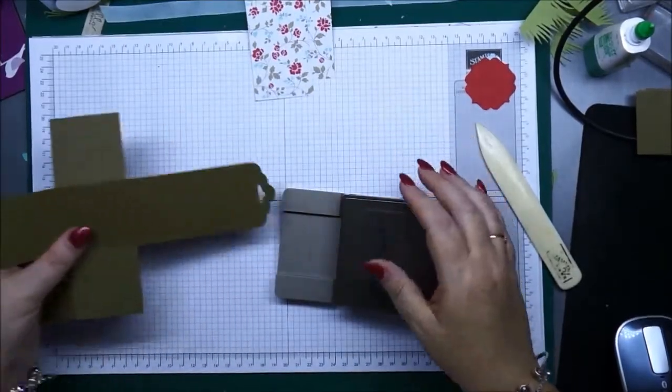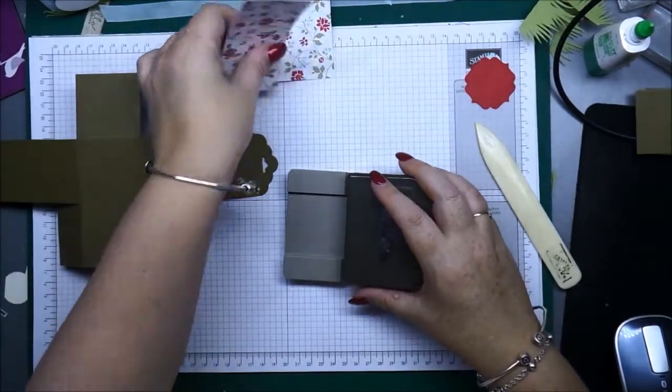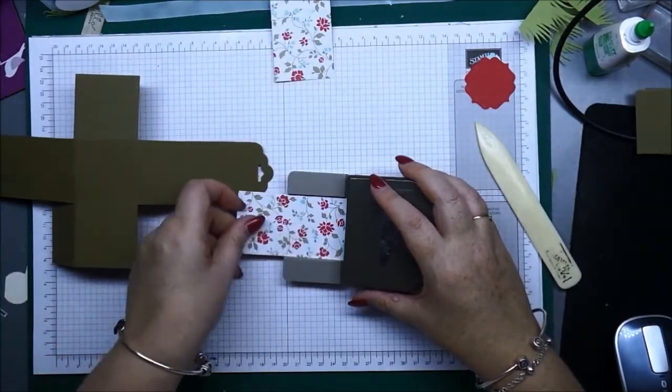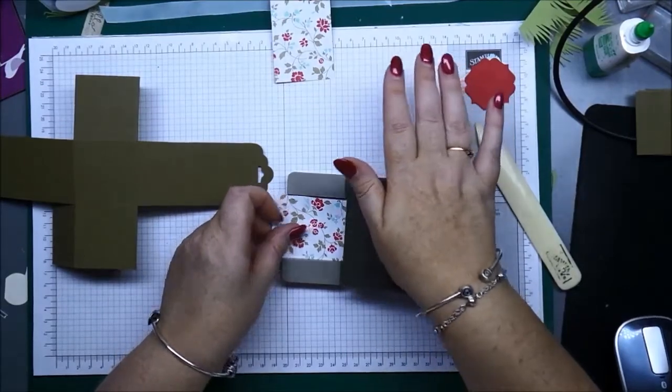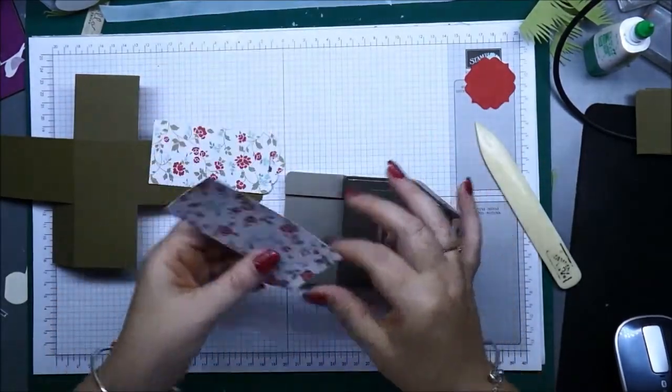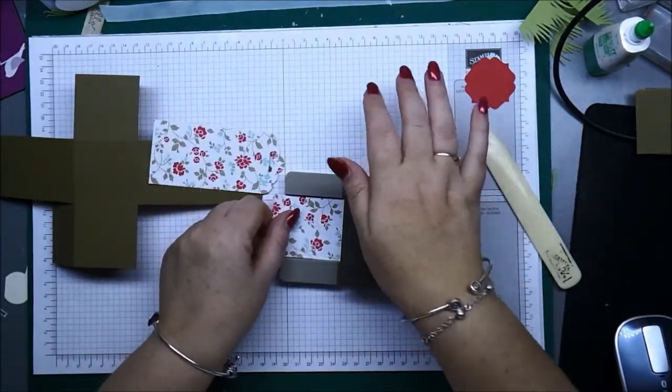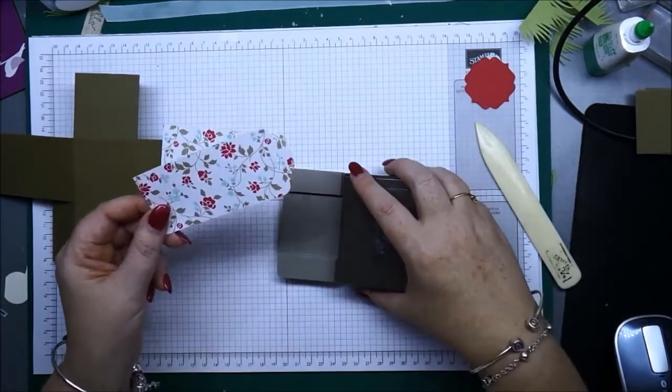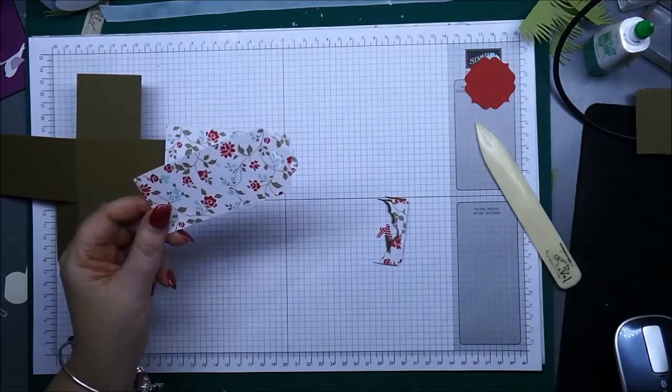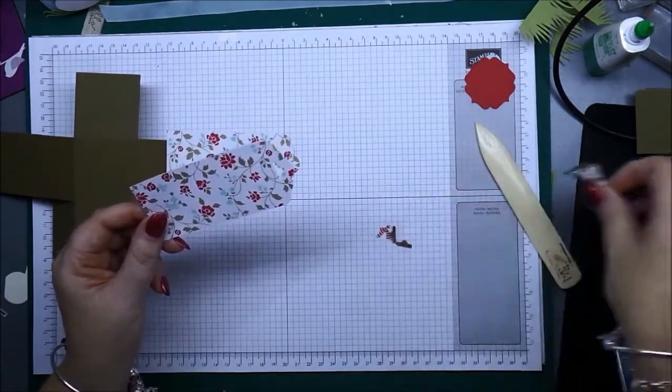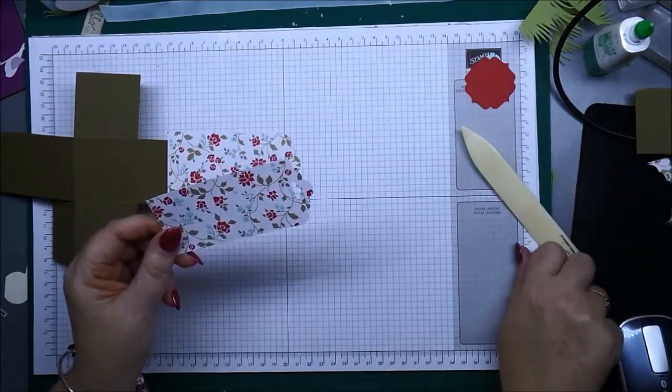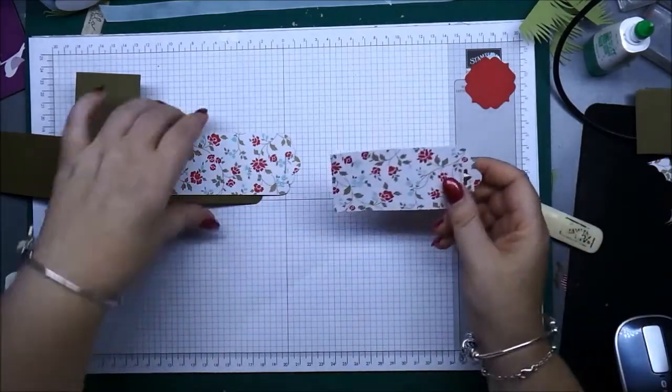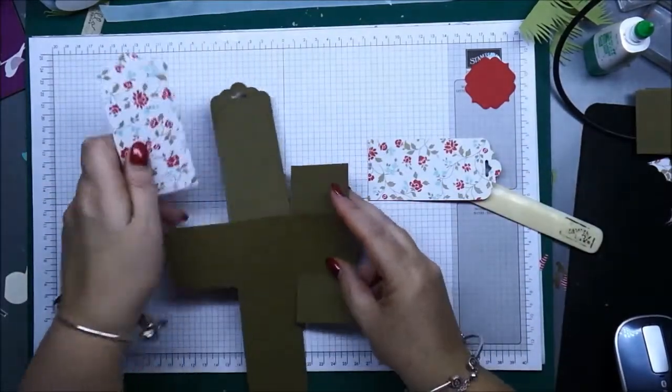Okay, and then while you've got your punch handy we'll do the same on our little panels. This is from the fresh prints which is a paper stack from the occasions catalog as well, and you get 48 sheets double-sided sheets for just $11.95, so that's pretty good value.